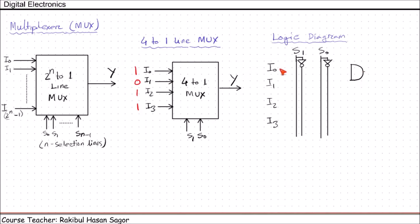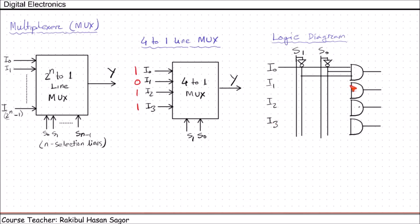If we use an AND gate here, one of the inputs of this AND gate will be I0. I0 will be transferred if S0 equals 0; in that case, S0 prime will give us 1 and S1 prime will give us 1. For this unique case, we will get I0 here. For the other inputs, we need to use three more AND gates. For I1 to be passed, we need to give the selection input as 01, so we need to take S1 prime and S0.